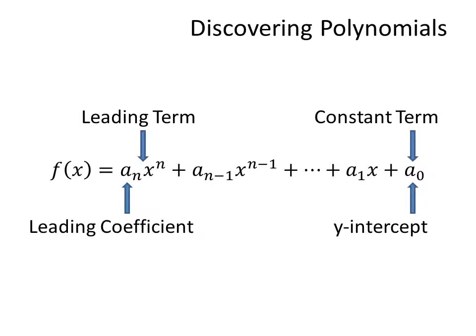Here are a few important definitions we're going to use throughout this unit. Whichever term has the highest degree — that is, the highest exponent — we call the leading term. The coefficient in front of that is called the leading coefficient. The last number, if there is a number that does not have a variable, we call the constant term. This is always the y-intercept.